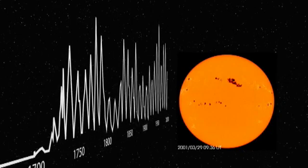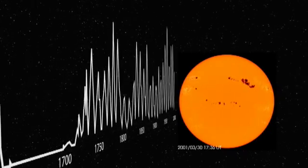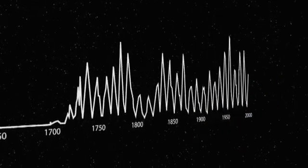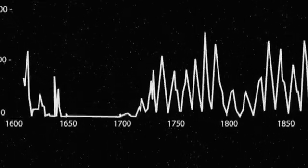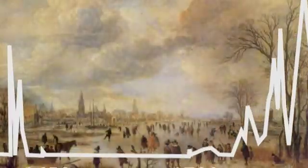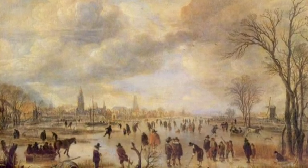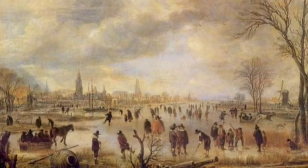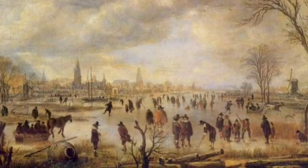The solar activity cycle has been linked to the climate on Earth, and an unusually long quiet period can mean trouble. Between 1650 and 1700, the sun had almost no spots, and the Earth went through a mini ice age. Paintings from this time show frozen rivers in parts of Europe where rivers do not normally freeze. Understanding variations on the sun is one of the keys to understanding the climate on Earth.